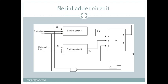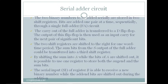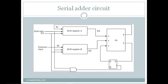The two binary numbers to be added are stored in two shift registers. Bits are added one pair at a time sequentially through a single full adder circuit. The carry out of the full adder is transferred to the D flip-flop, which stores the carry out of the full adder, making it available as the third bit for the next addition of the pair of bits.